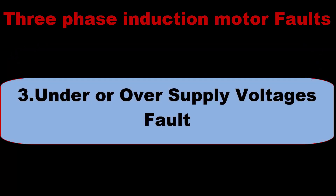Under or over supply voltage fault: this fault occurs when supply voltages are under or over a specific limit. The limit of three-phase AC supply voltages is 380 to 440 volts. When supply voltages cross this limit, the motor could be burned or heat up.